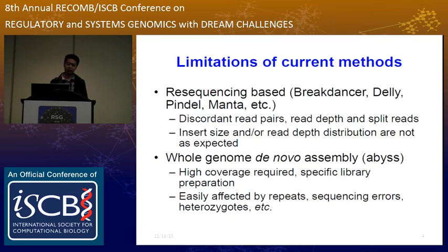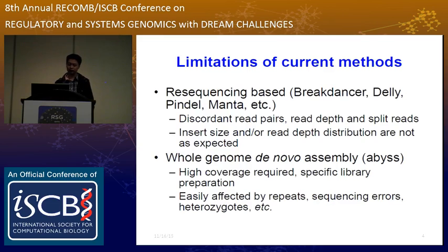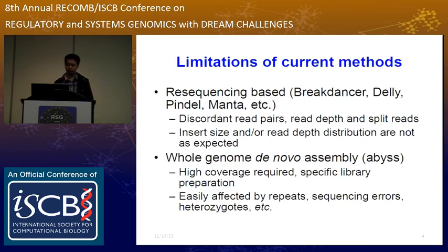Typically, there are two types of structural variation algorithms. One is a resequencing-based method; the other is a whole-genome assembly method. Resequencing-based methods find structural variations based on the mapping signatures of short reads. These signatures include discordant read pairs, read depths, split reads, etc., or a combination of them. The current mainstream SV callers are all based on these methods. However, these methods depend heavily on insert size or read depths, which are not always as reliable as expected. So they have limitations.